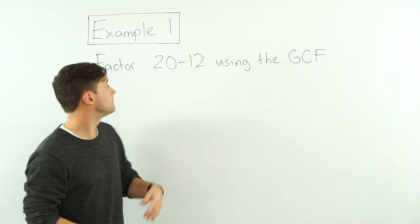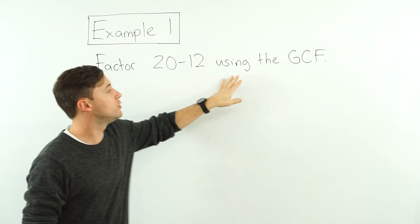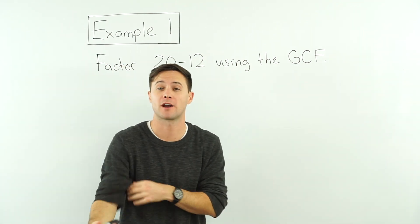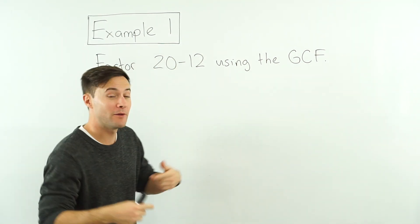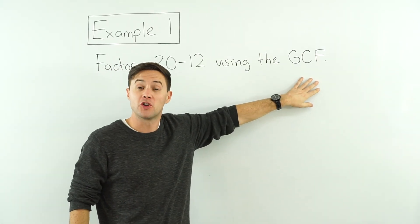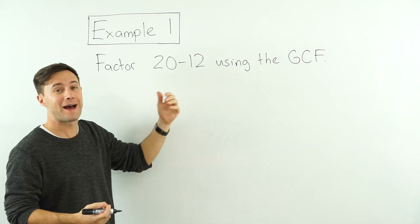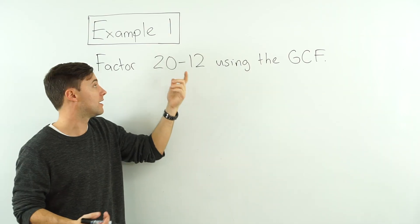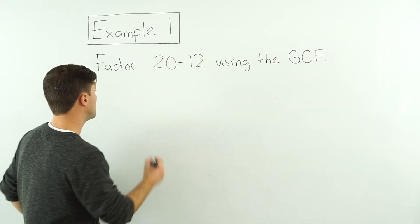Alright, example one: factor 20-12 using the GCF. Now, if we're factoring, obviously we're going to be talking about factors. And if you think of factors, you're probably going to be thinking of greatest common factor. So first, if we're going to factor using the GCF, we need to find the factors of 20 and 12.